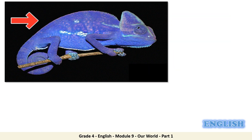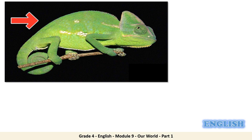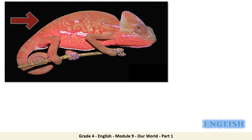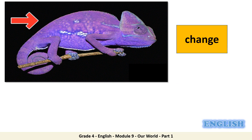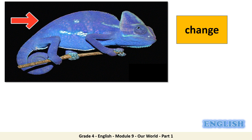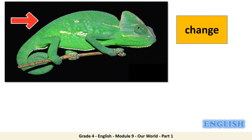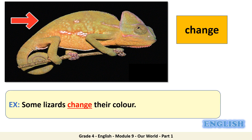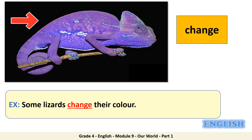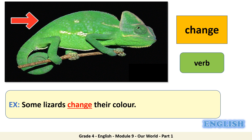Have a look at this picture. What's going on? What is this word? Change. Let's use it in a sentence. Some lizards change their color. Can you tell me what part of speech it is? It's a verb.